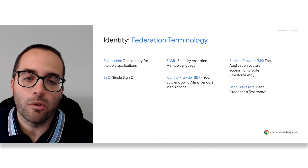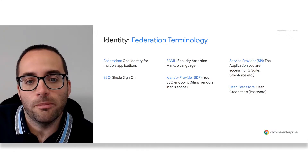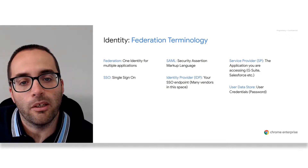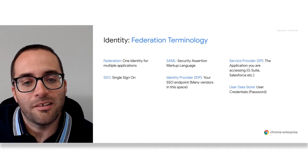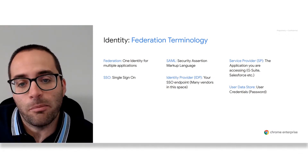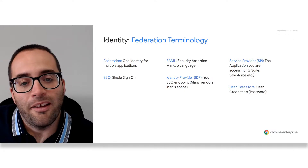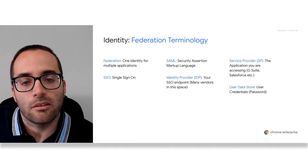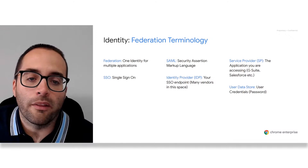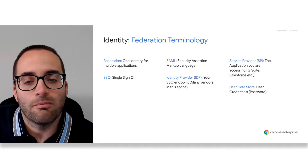For the remainder of this webinar, we're going to focus on federation using SAML single sign-on. But before we get into the detail, let's quickly run through some terminology. Federation is using a single identity for multiple applications. SSO is short for single sign-on. SAML is short for Security Assertion Markup Language and is an implementation of single sign-on. An identity provider, or IDP, is your single sign-on endpoint — there are many vendors in this space. A service provider, or SP, is the application that you're accessing, so in this case G Suite or your Chromebooks — it could be other SaaS solutions like Salesforce as an example. And your user data store is where your credentials are stored, so your user's account name, username, and password.